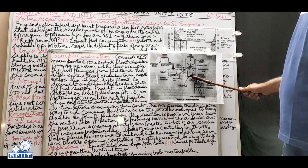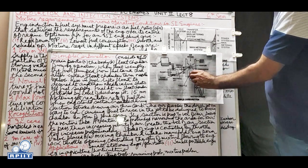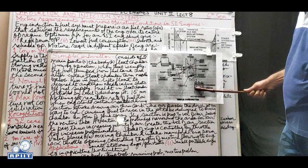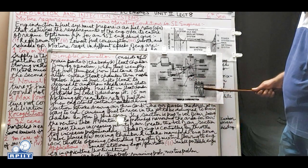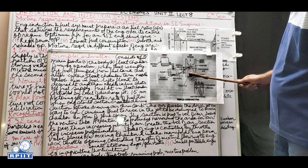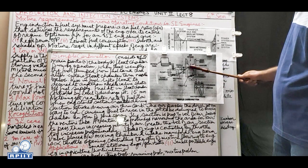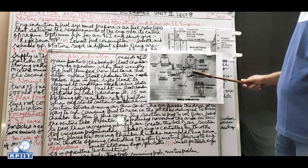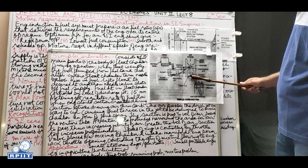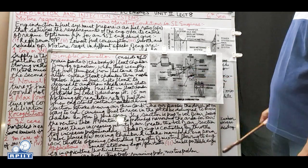The throttle is connected directly to the accelerator pedal. When full power is required, the throttle straightens up to allow more mixture into the engine cylinder. There is a mixing chamber where air and fuel from the discharge jet combine. The throttle, placed between the mixing chamber and the intake manifold, regulates the mixture flow depending on the power required by the driver.